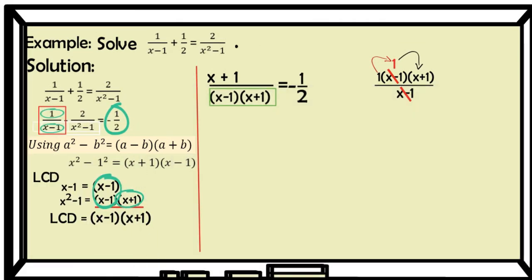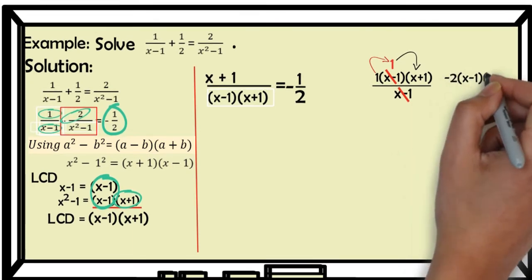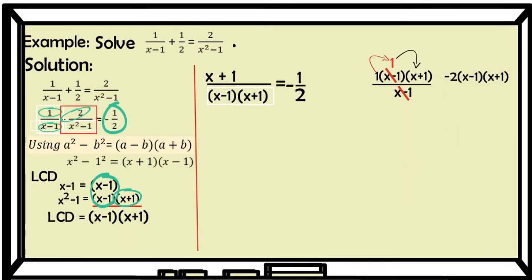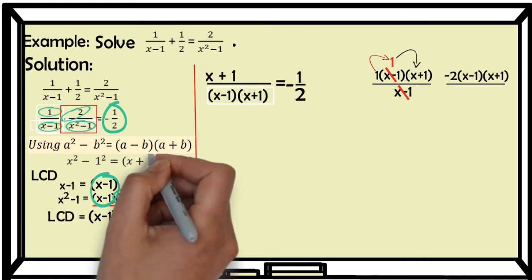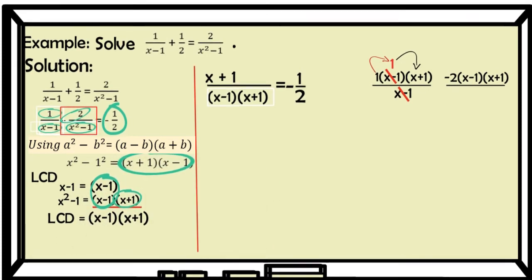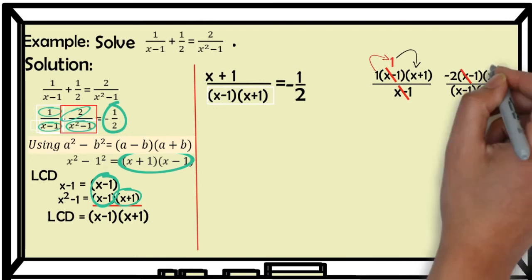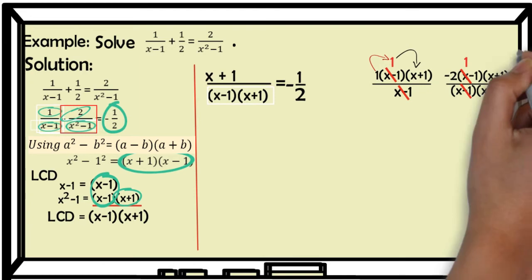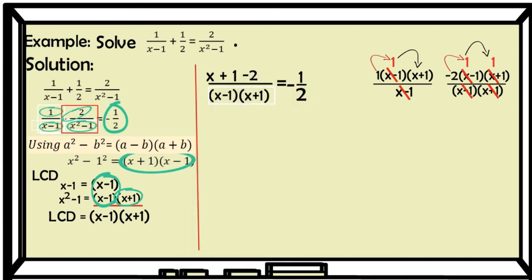Next is the second expression: negative 2 over (x squared minus 1). Again, multiply the LCD to the numerator: negative 2 times (x minus 1)(x plus 1), over the denominator (x squared minus 1), which equals (x plus 1)(x minus 1). The (x minus 1) cancels, giving 1, and the (x plus 1) also cancels, giving 1. So we have negative 2 times 1 times 1, which is negative 2.